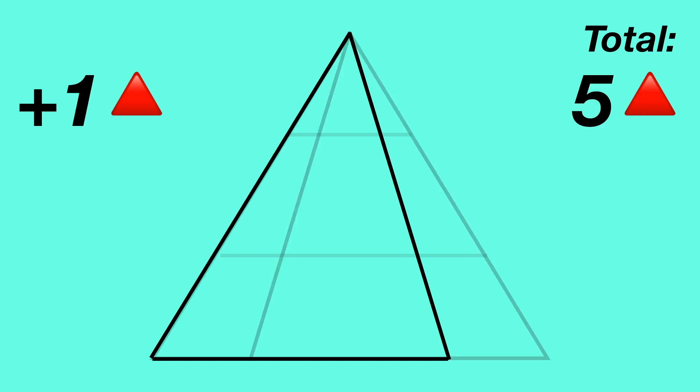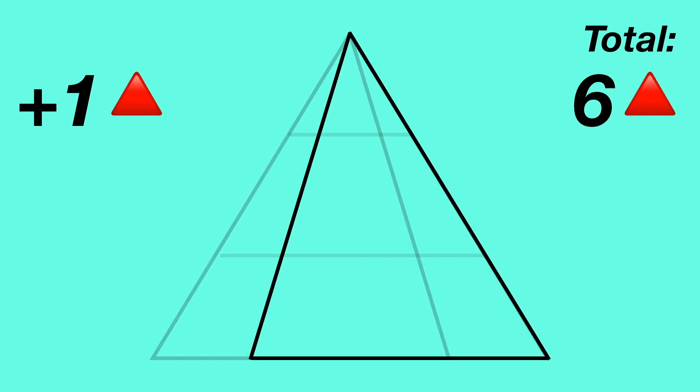Then there's two remaining triangles, one on the left and the other on the right, bringing the running total to six triangles.